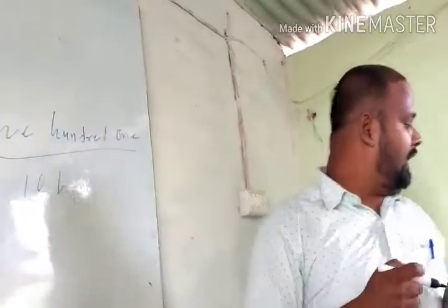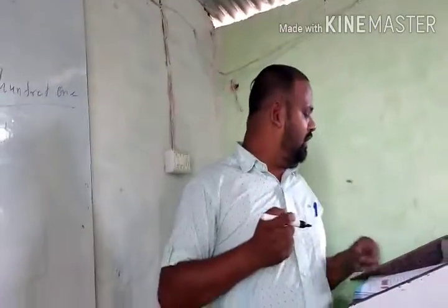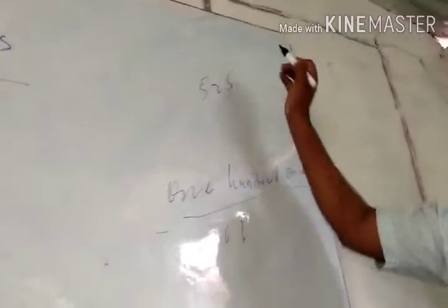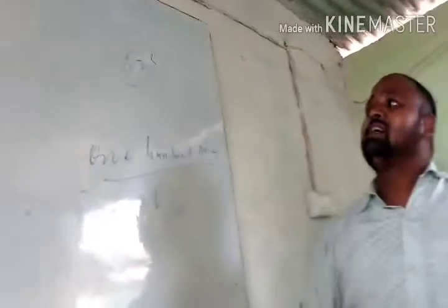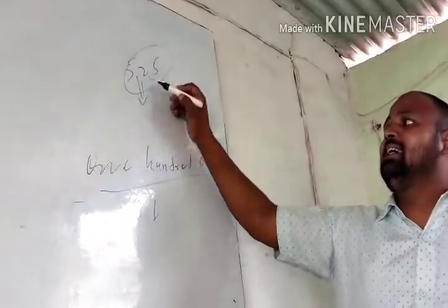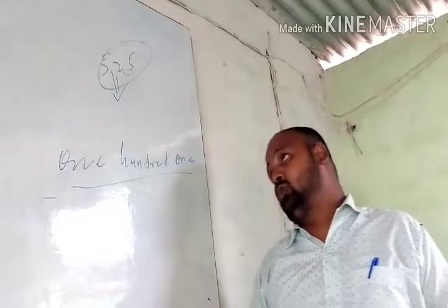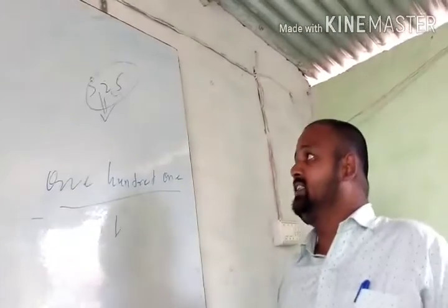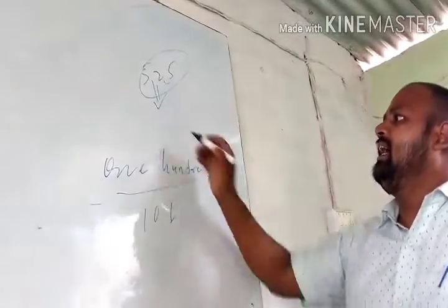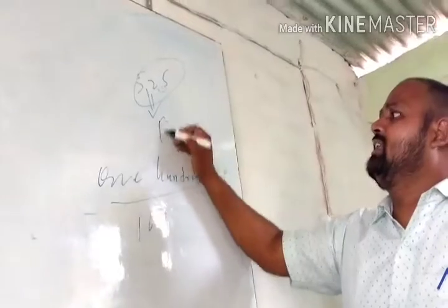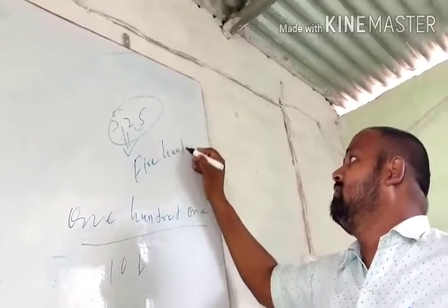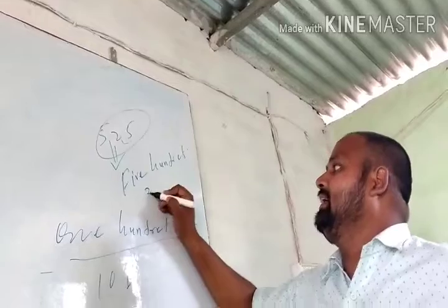If you have a number name given, you will write the number. Like you have 525, you will write it in numerals. We already know how to write 3-digit numbers from class 2, and we will write them — for example, 525.